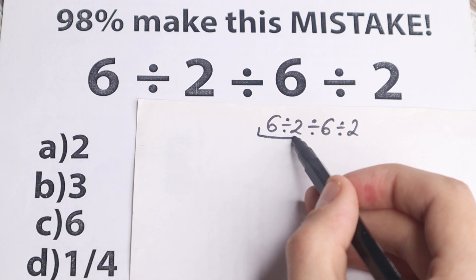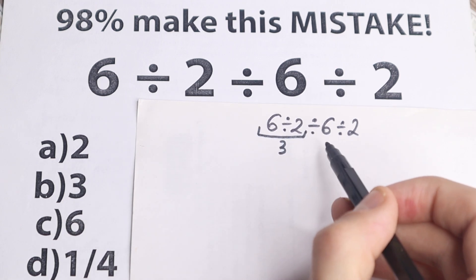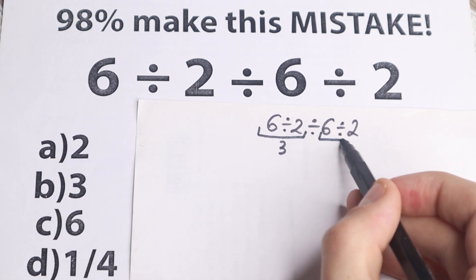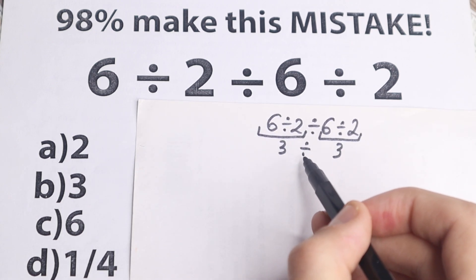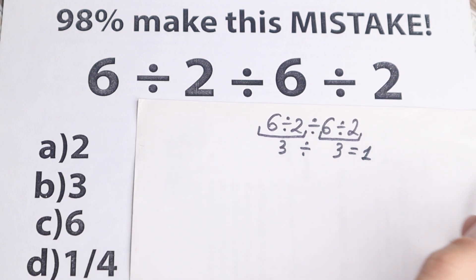6 divided by 2, they say, okay, 6 divided by 2 equal to 3. And then 6 divided by 2, in the end, equal to 3 as well. And then in the middle, this division, so 3 divided by 3, equal to 1. A lot of students solve it like that, they say, okay, this is equal to 1.